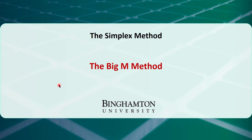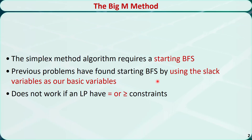In this video, I will talk about how to use the Big M method, which is the special case of the simplex method, to solve linear programming problems with equality constraints or greater than or equal to constraints. In the simplex method, we need to find an initial basic feasible solution to start with. In the previous videos, we found an initial basic feasible solution by using slack variables as basic variables because we only had less than or equal to constraints. This does not work if a linear programming problem has equal or greater than or equal to constraints. In such a case, the Big M method may be used to solve the problem.